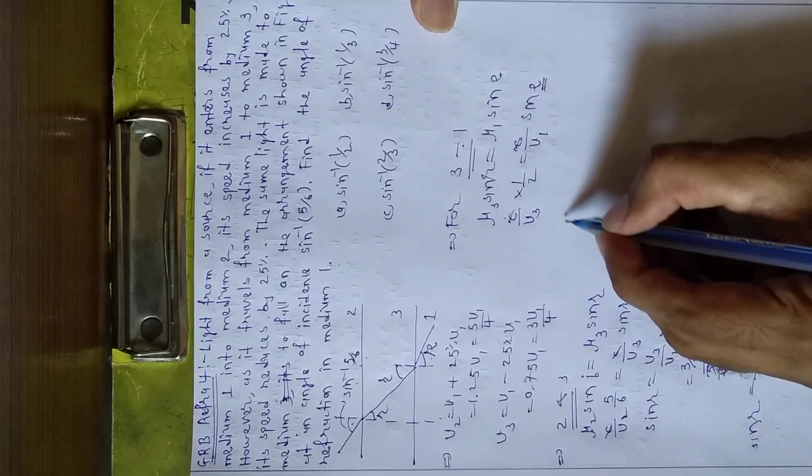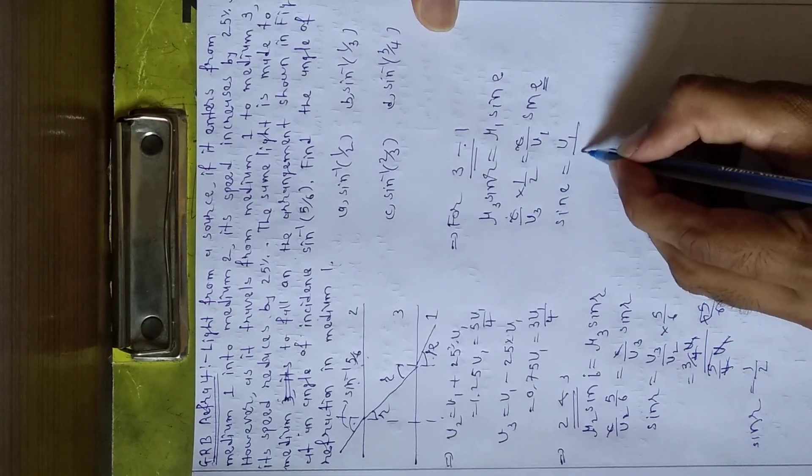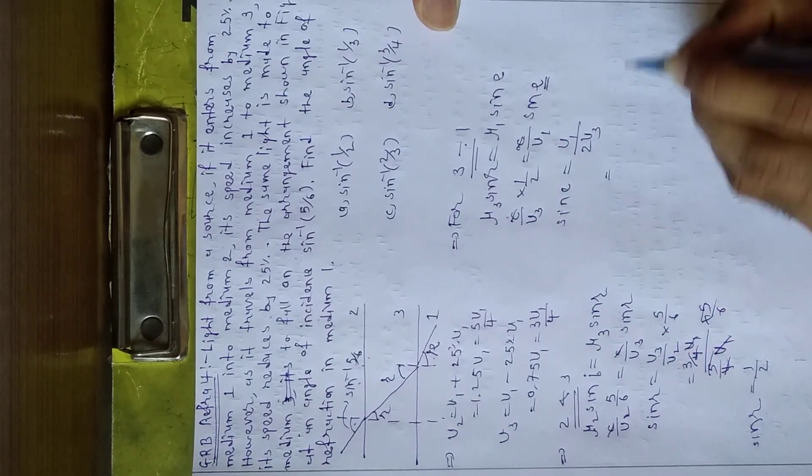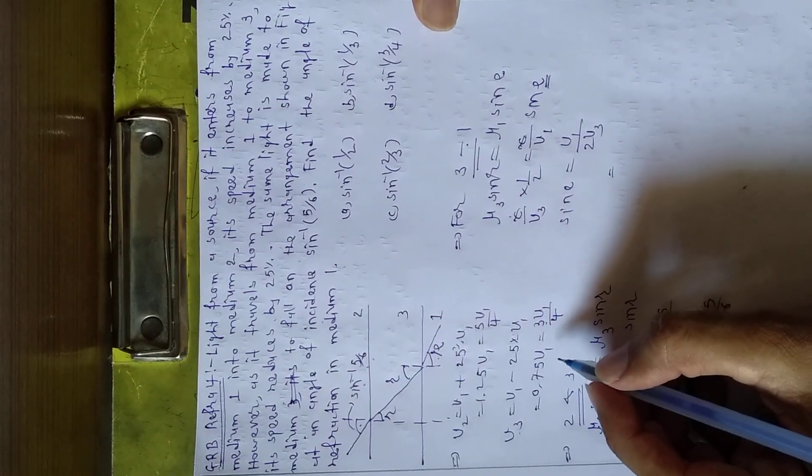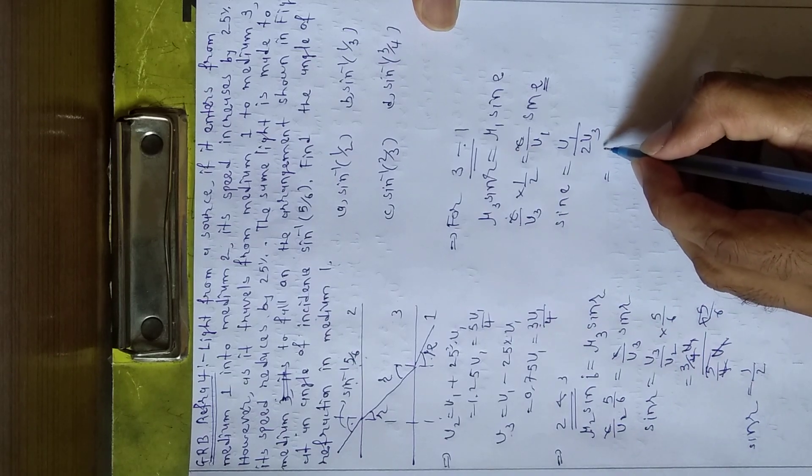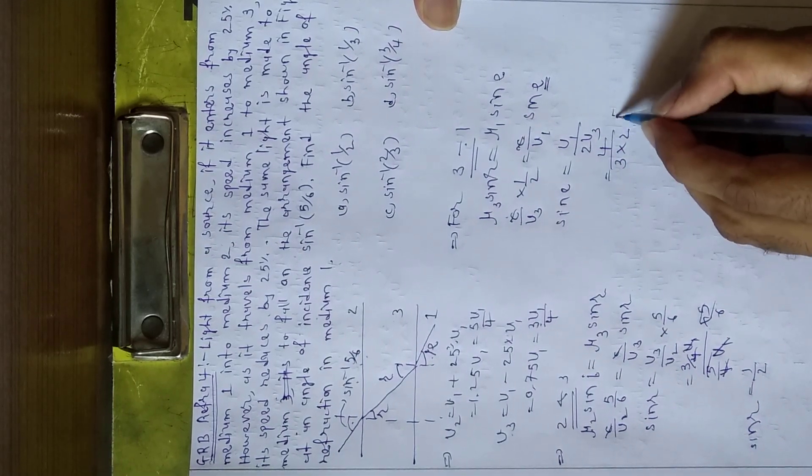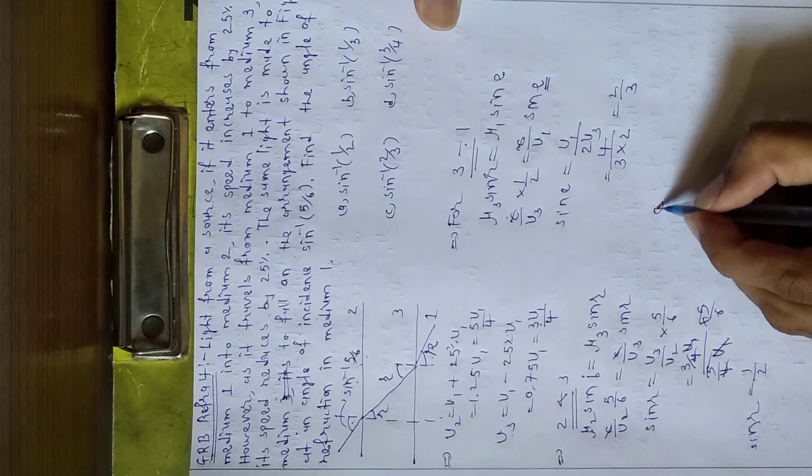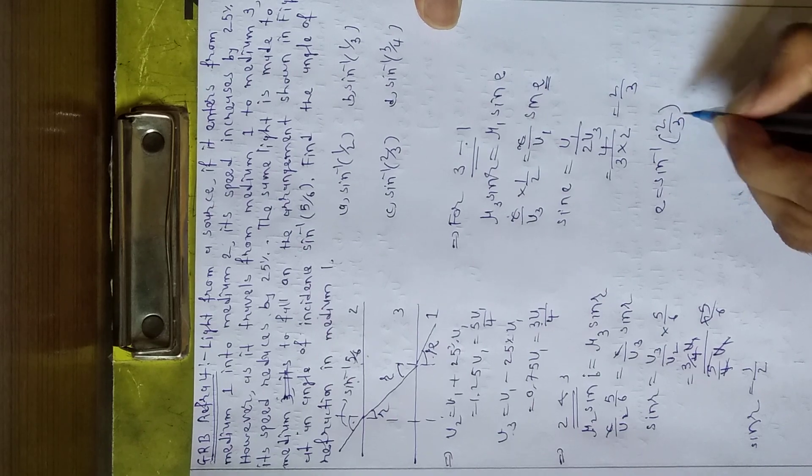C cancels. Sin e equals v1 by 2v3. V1 by v3 equals 4 by 3, so sin e equals 2 by 3. Therefore e equals sin inverse 2 by 3.